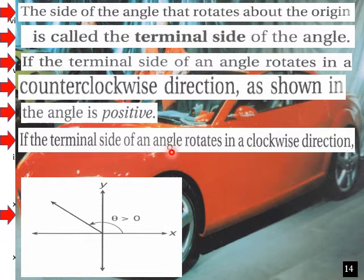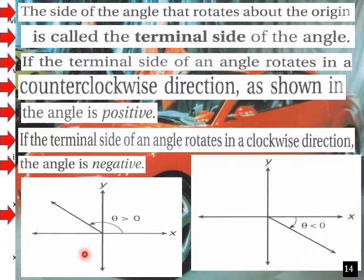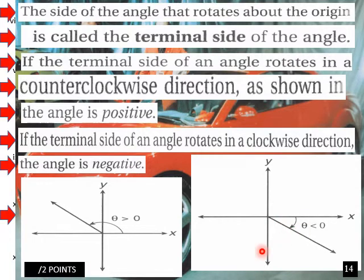If the terminal side of an angle rotates in a clockwise direction, the angle is negative. So when it goes this way, it would be a negative angle — theta would be negative.